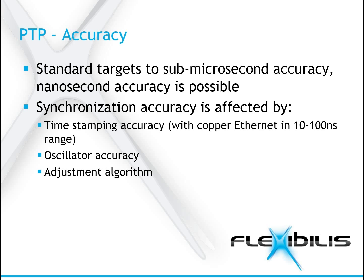One significant source of inaccuracy in the network are possible non-IEEE 1588 capable switches. Switches in the PTP network that do not support PTP cause a lot of delay variation that cannot be compensated. This affects the accuracy a lot. The delay caused by non-compliant switches is typically asymmetric because it is a function of network traffic, which is typically asymmetric too. PTP is unable to measure or correct this kind of unknown asymmetric network delay.